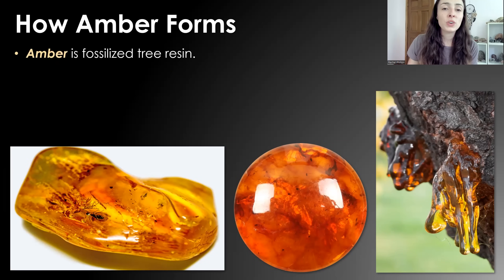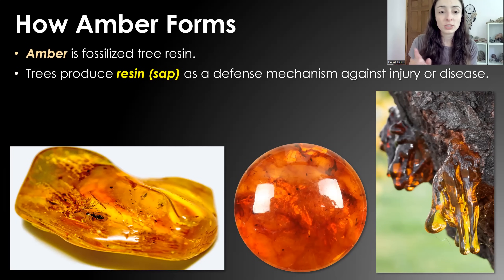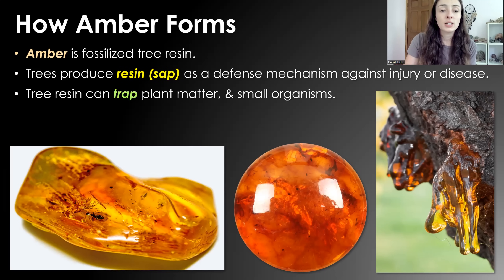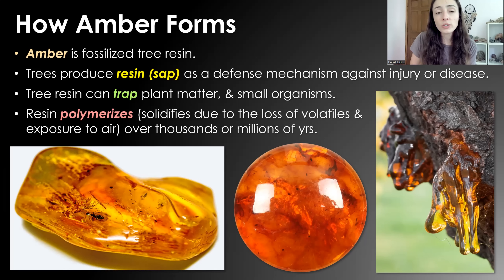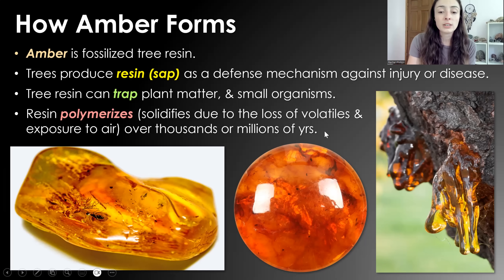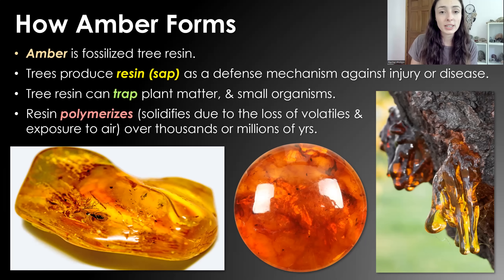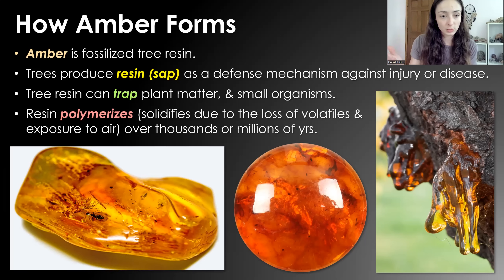Last we have amber. Amber is fossilized tree resin — trees produce resin or sap as a defense mechanism against injury or disease. Resin can trap small pieces of plant matter or small organisms like insects, often leading to fossilized insects that are much better preserved than any fossilized insect in regular rock. Over time, resin undergoes polymerization — a process in which it gradually solidifies due to the loss of volatiles and exposure to air over thousands to millions of years. Its composition is organic, containing carbon and hydrogen, so it's not a typical inorganic mineral.